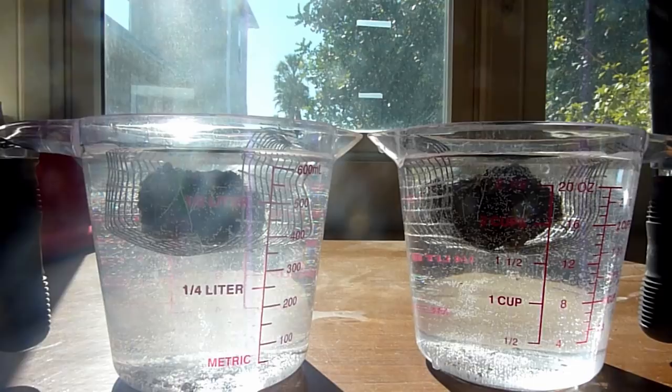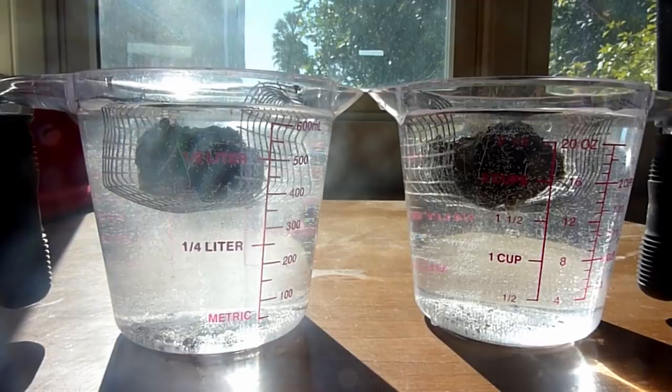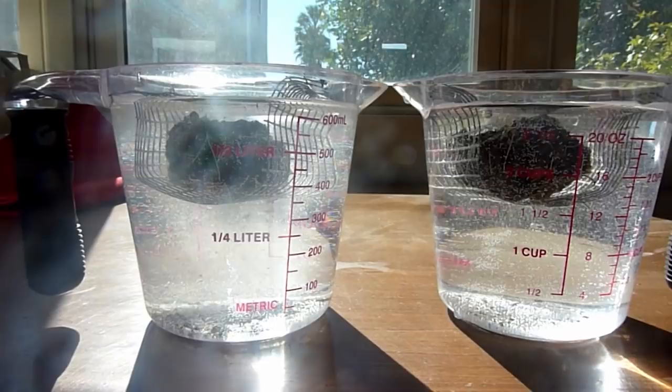First, how does this indicate soil health? And second, why is having the constituents of soil—sand, silt, and clay particles—maintain cohesion important?